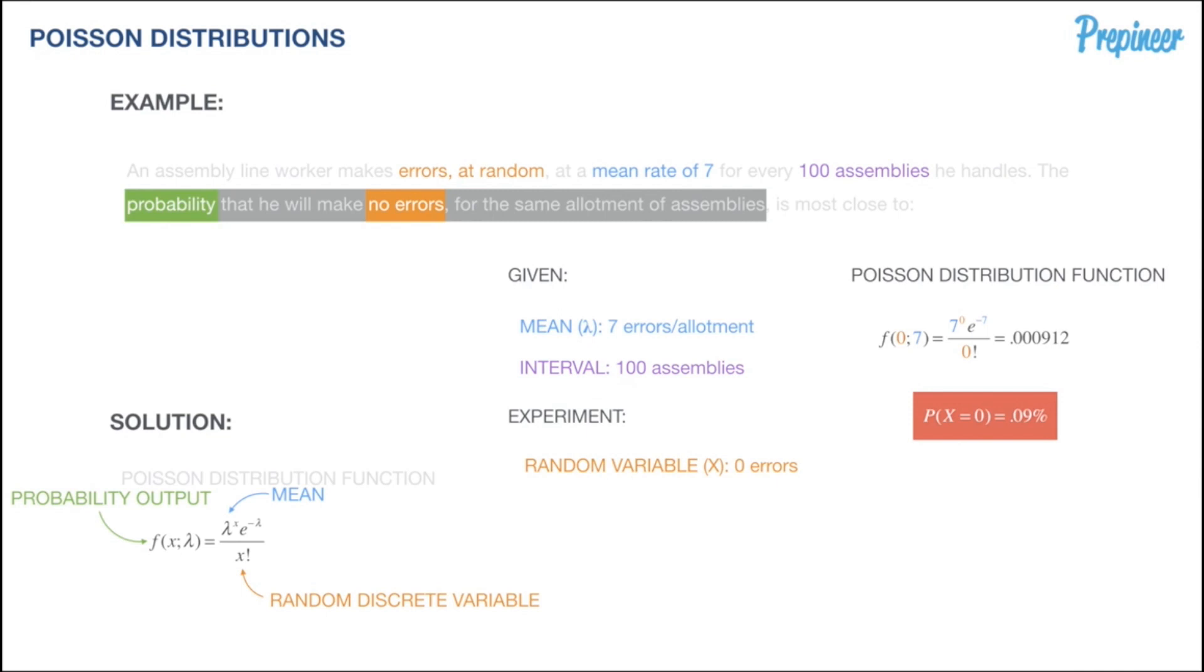This tells us that the probability that he will make no errors is very slim—it's 0.09%. Let's hope that's not an airplane assembly or something critical. In this case, it's a fraction of a tenth percent probability that he will not make any errors.